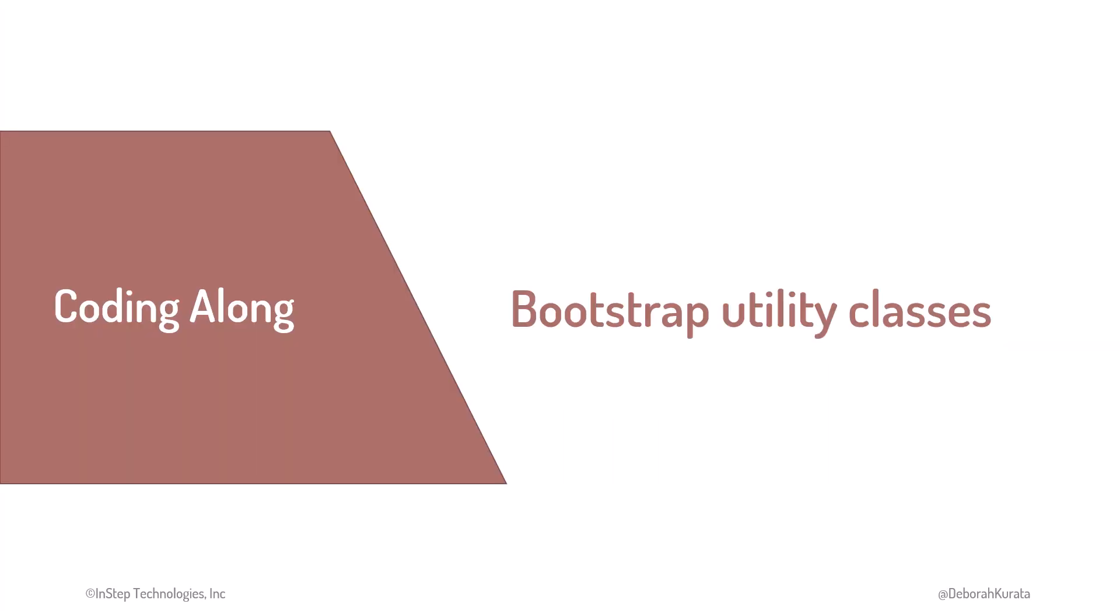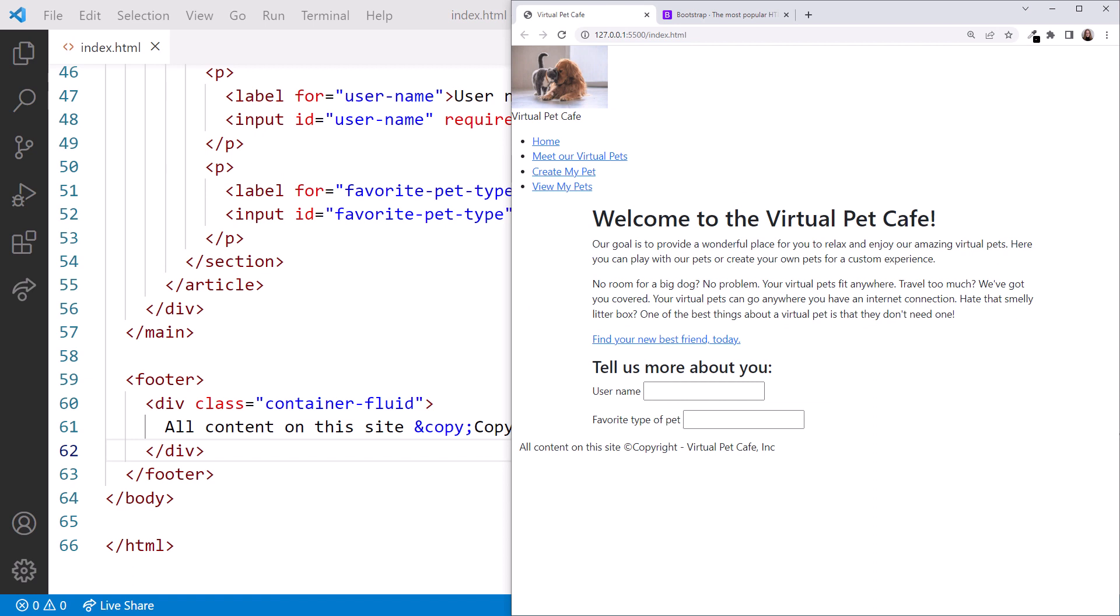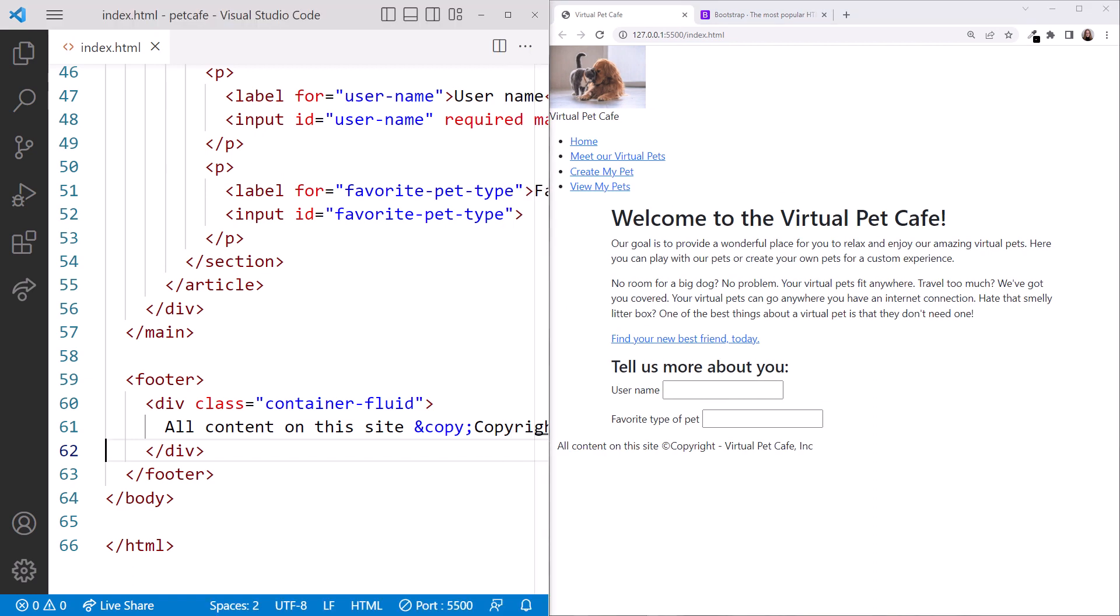Let's try out some of these utility classes. Here again is VS Code, just as we left it, with the petcafe folder open and editing the index.html file. GoLive is running, and we see the home page in the browser. Let's arrange the windows so we have the editor on the left and the browser on the right.